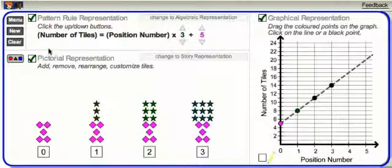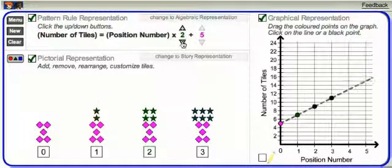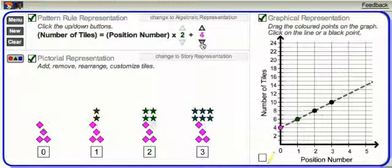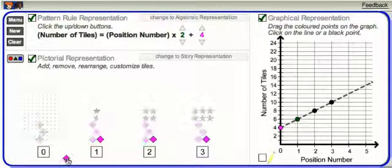The constant and multiplier can be changed in any of the representations. Notice how changing the linear growing pattern in one representation is dynamically reflected in other representations.